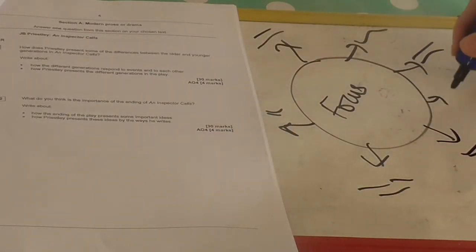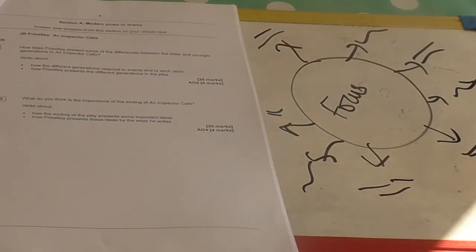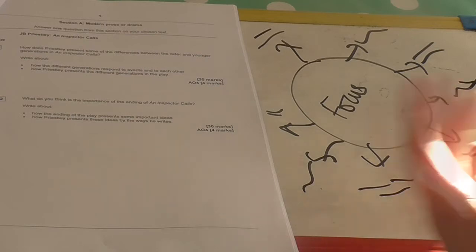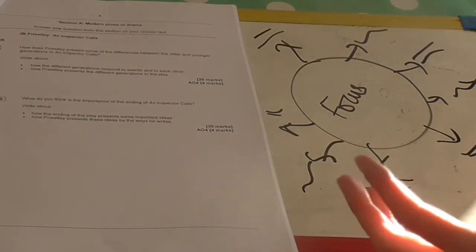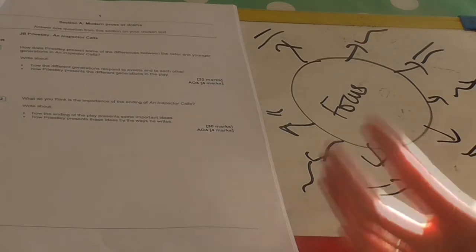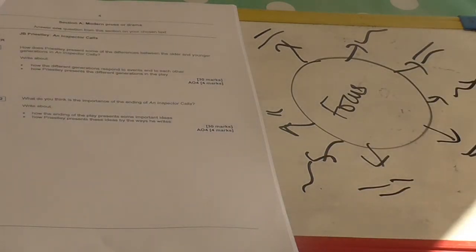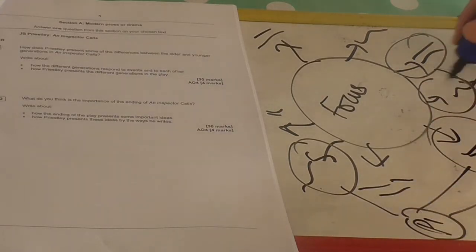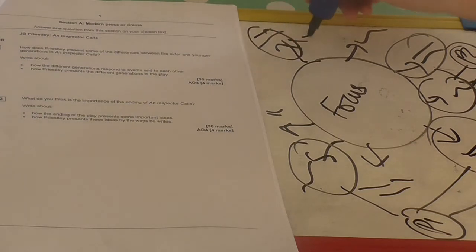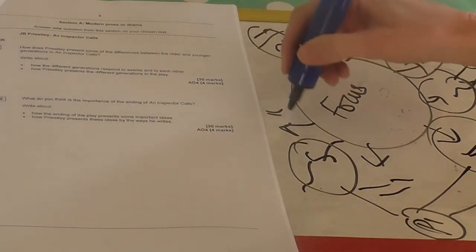Once you've written your initial thoughts, you can then decide how your argument or how your essay is going to unfold. For example, if you're going to be talking about a certain character or characters, you might like to talk about the different traits that they have in a particular order. You might then organize this point, this point and this point into your paragraph one. This point could be your paragraph two, and so you'd find that you're organizing your ideas there.